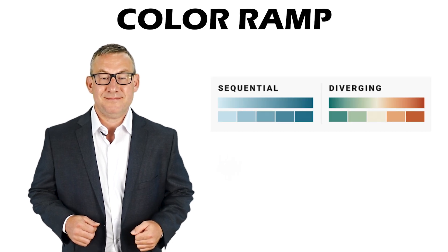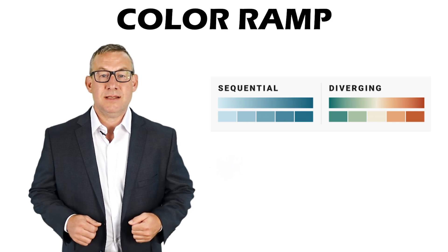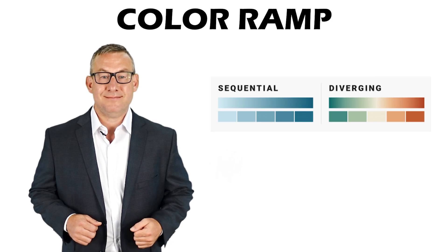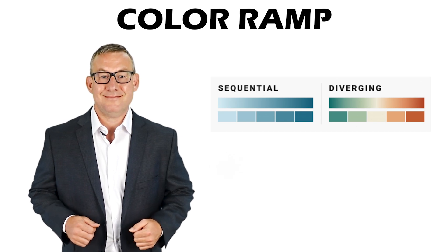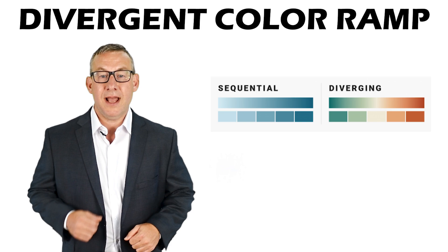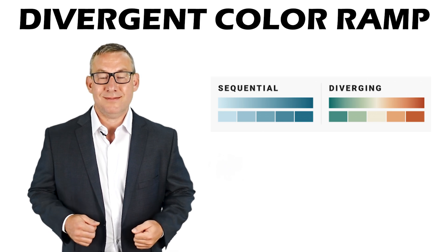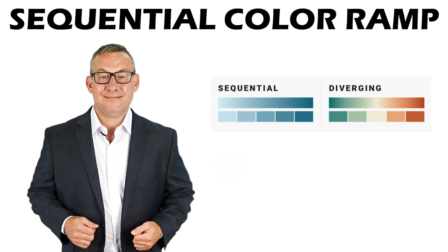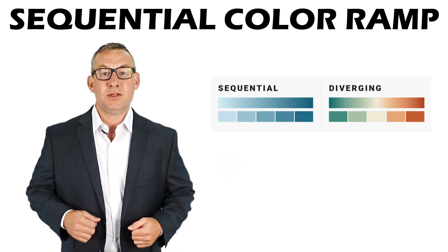A color ramp is a thematic set of colors used to represent variation, order, sequential values, or different categories on a map. Color ramps are usually divergent or sequential. A divergent color ramp shows when values are above or below a central value — for example, elevation above or below sea level. A sequential color ramp uses a sequence of colors to indicate which values are smaller or larger than others.